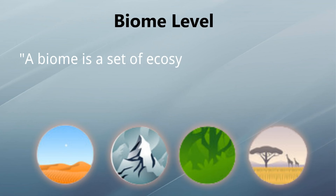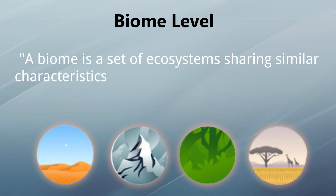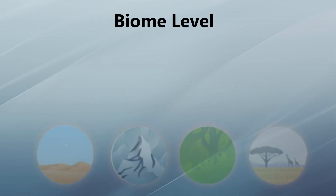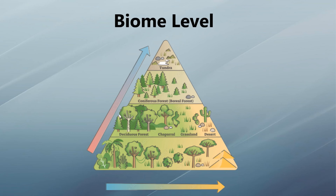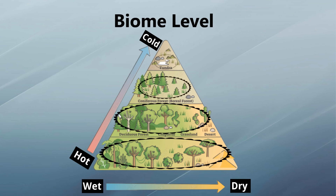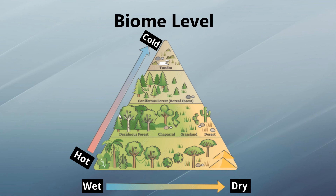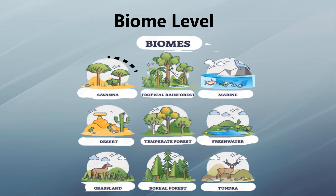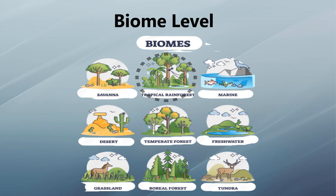At the biome level, a biome is a set of ecosystems sharing similar characteristics with their abiotic factors, adapted to their environments. No two biomes are exactly the same. Climate decides where the edges of each biome are and how many plants and animals live in each one. The most important parts of climate are temperature and rainfall. Biomes include the savannah, tundra, boreal forests, grasslands, deserts, tropical rainforests, tropical deciduous forests, and temperate forests.